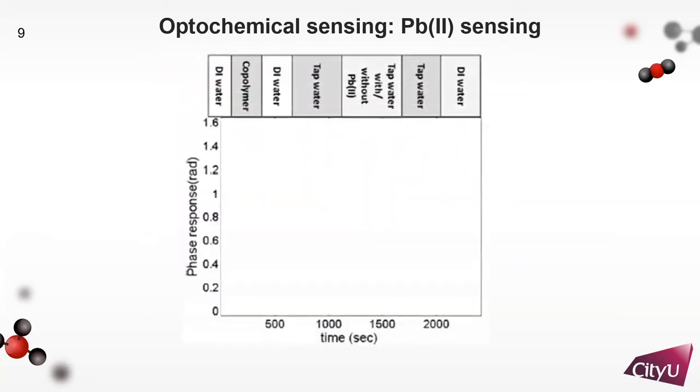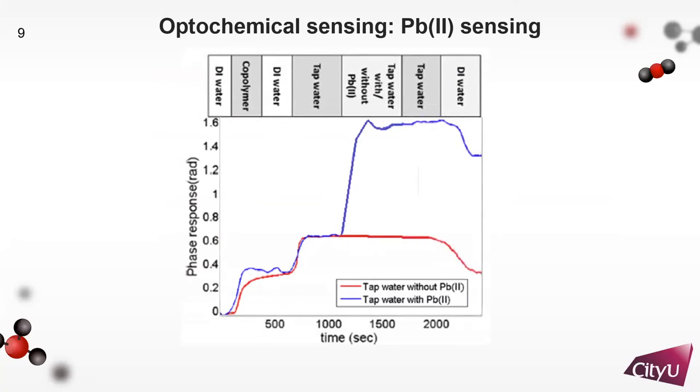This picture shows the phase response computed from the measured optical signal with time. You can observe the large difference in the phase response between blue and red curves during the water sample reacting with our sensing surface. The one with lead ion will be captured by the polymer and significantly change the surface environment. As a result, the spectrometer records the variation and eventually we obtain a large response from a lead-contaminated water sample.